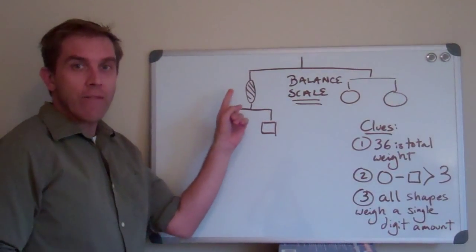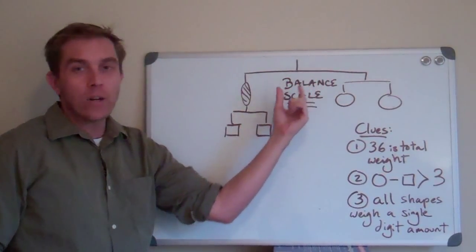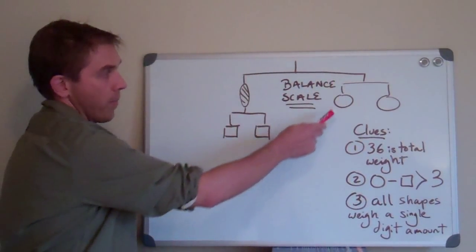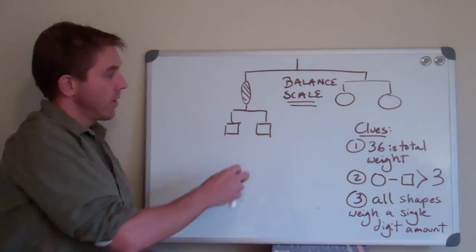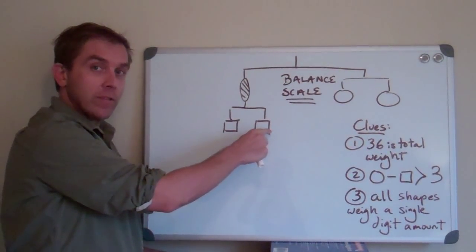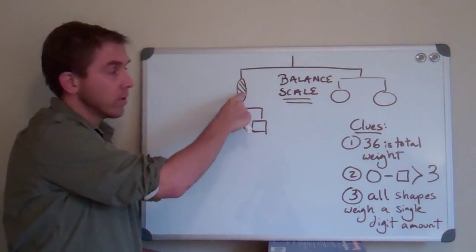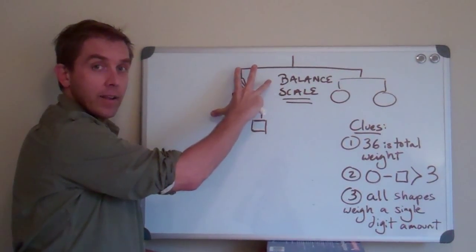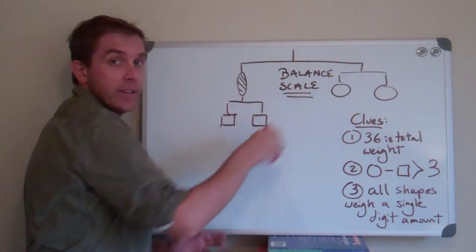This is set up so that for every arm, each arm is equal to the other side. Each of these are weights, so this square is the same as this square because it's balanced. This oval is by itself, but this entire side is equal to this side.